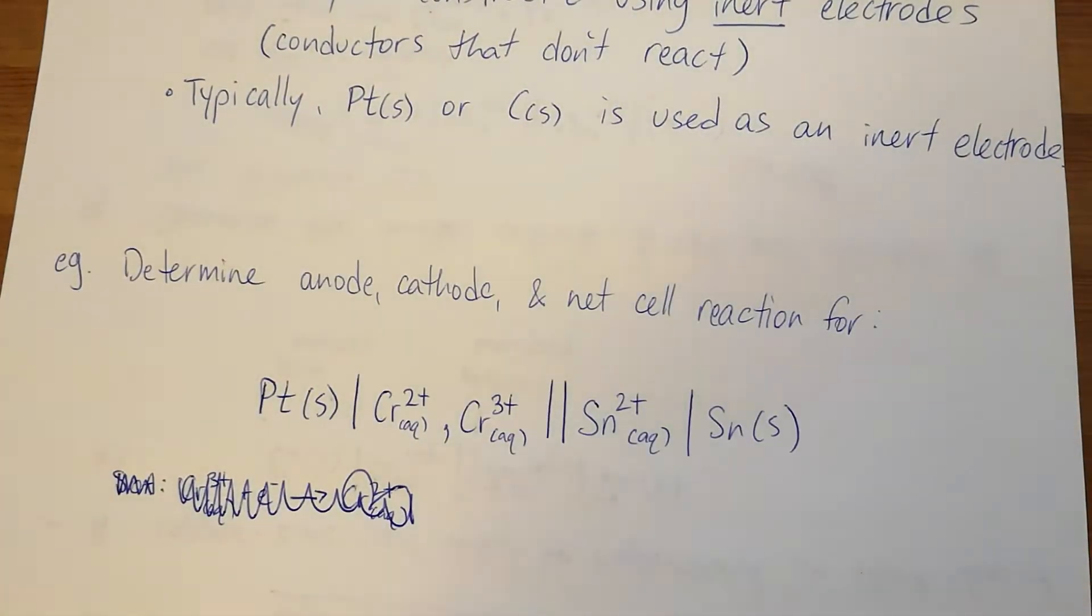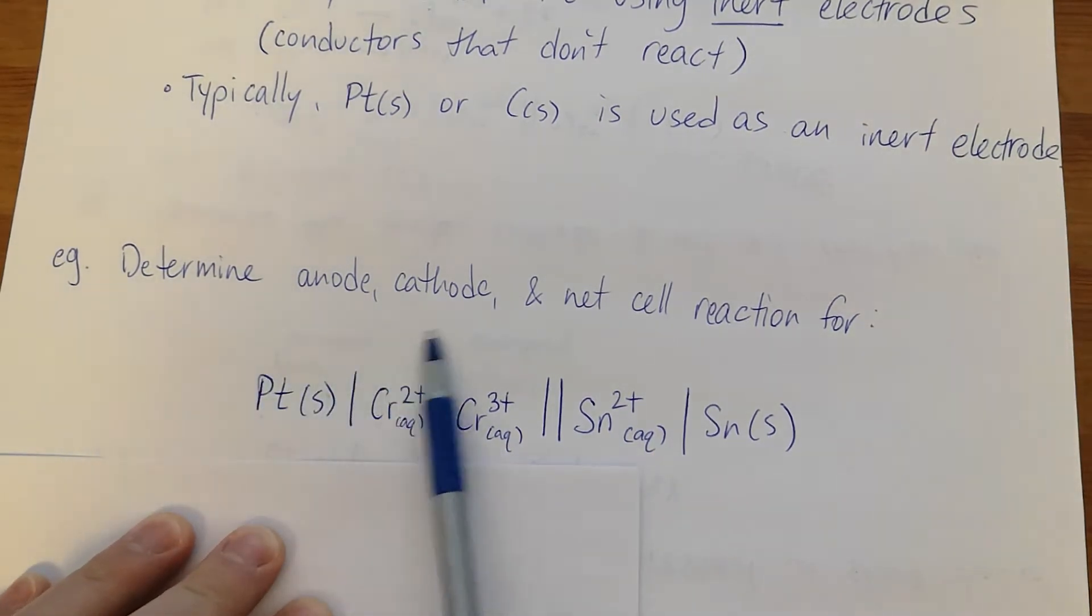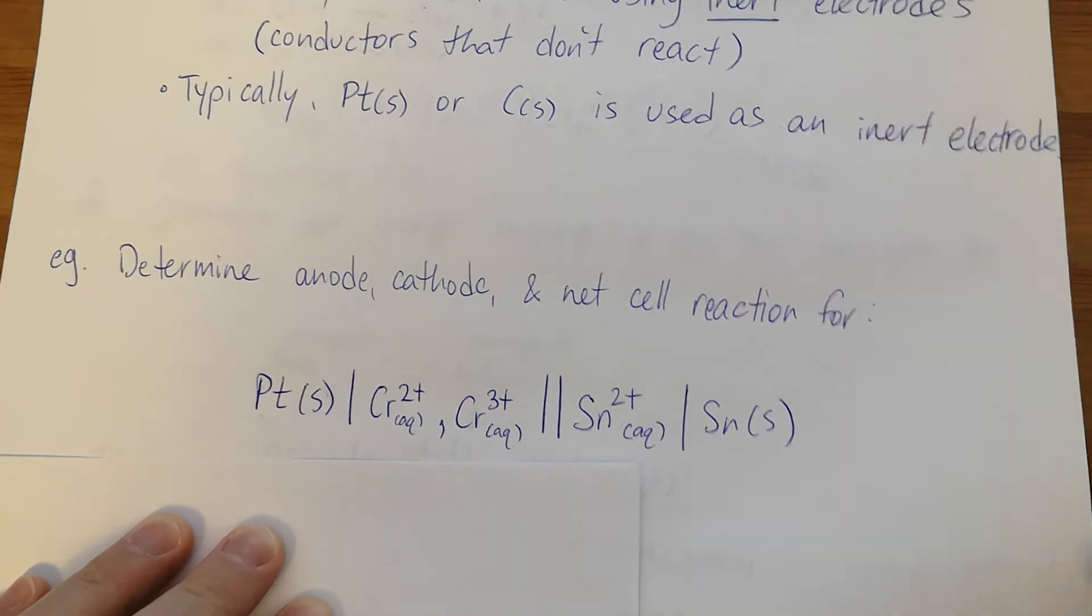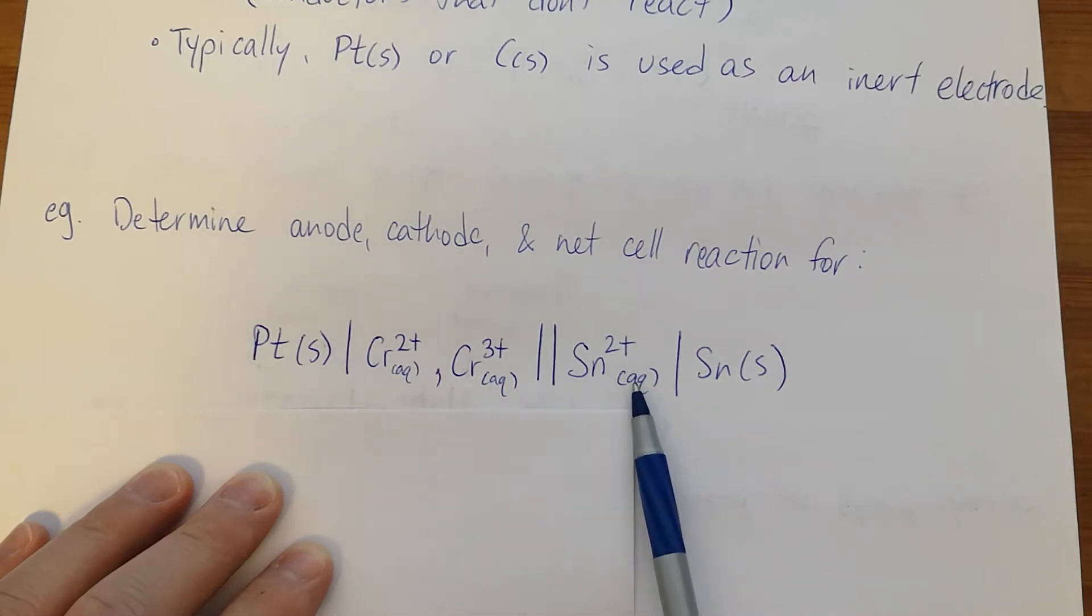So here's the next example I want us to look through. We're going to find the anode and cathode, the net cell reaction for this cell. That looks pretty interesting. It's platinum in a solution of both chromium two and chromium three with a tin half cell.